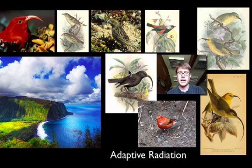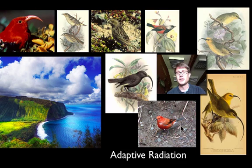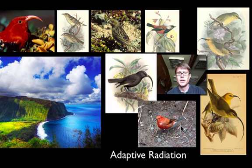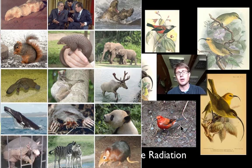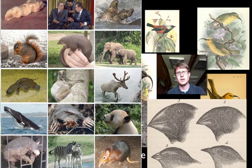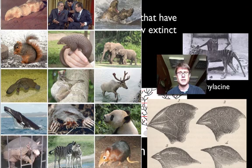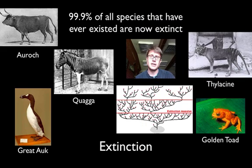Many of the honeycreeper images are illustrations rather than photographs because humans arrived and brought predators, causing many of those species to go extinct. Other famous examples of adaptive radiation include mammals, which radiated to fill niches once held by dinosaurs after the dinosaurs went extinct, and the Galapagos finches, which diversified from one population across the islands.